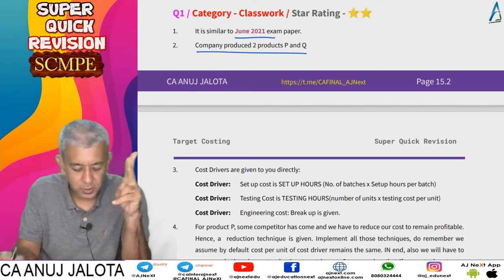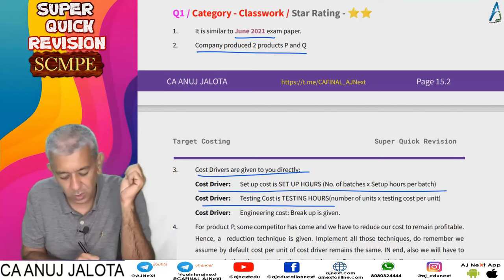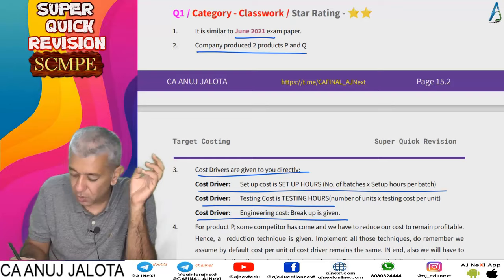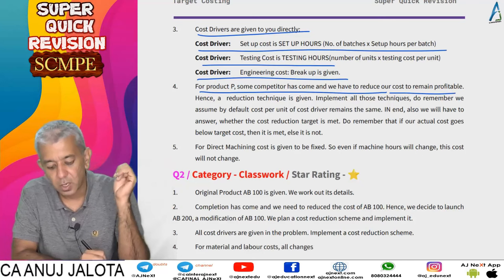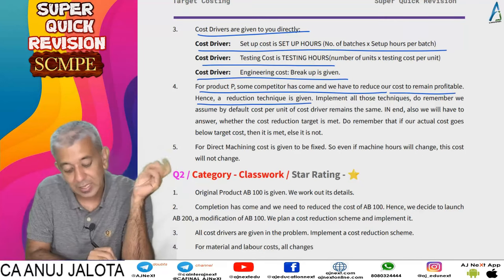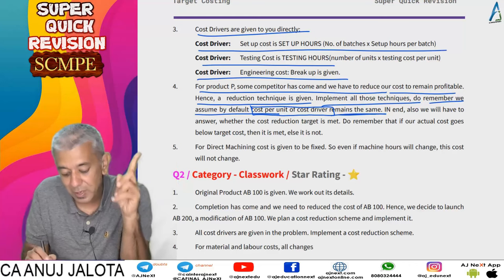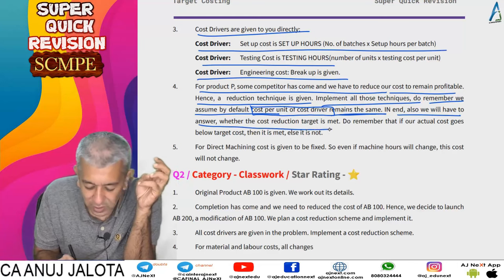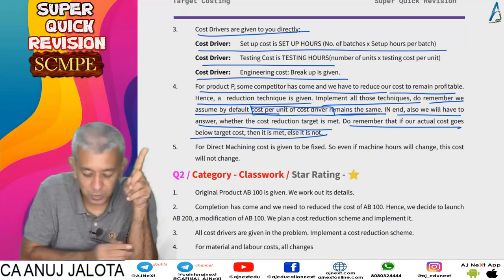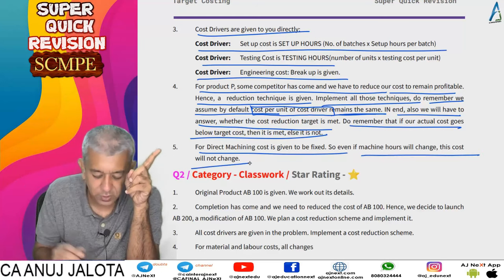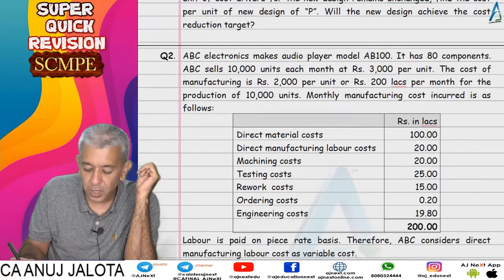Summary of question one: the company manufactures two products P and Q. Cost drivers are given directly — setup hours for setup cost, testing hours for testing cost, and a breakup for engineering cost. A competitor appeared, requiring a cost reduction for product P. Cost reduction techniques are given to implement. By default, cost per unit of cost driver remains the same. We answer whether the cost reduction target is achieved. Direct machining cost is fixed, so even if machine hours change, the cost remains the same.